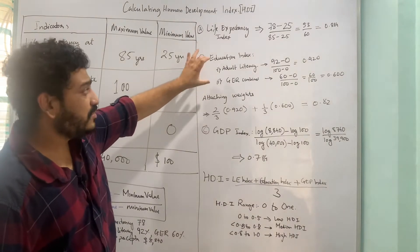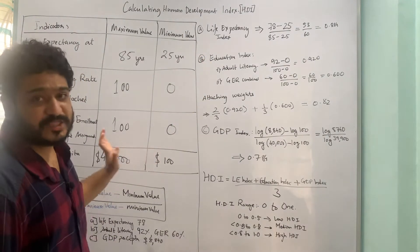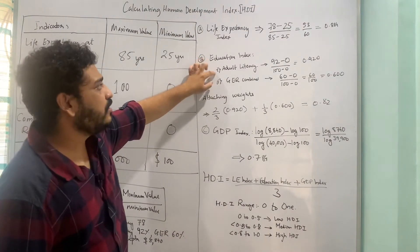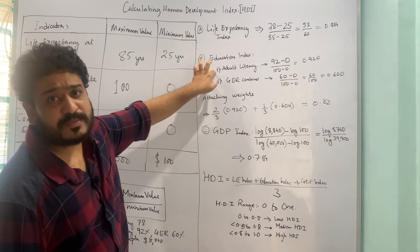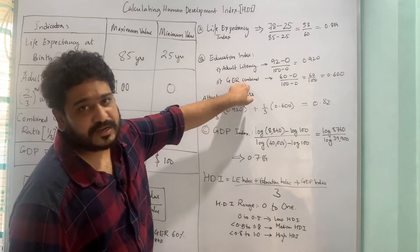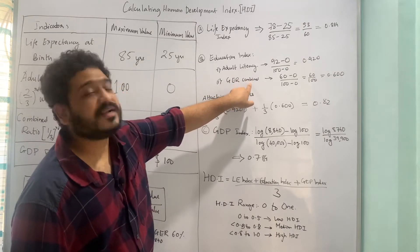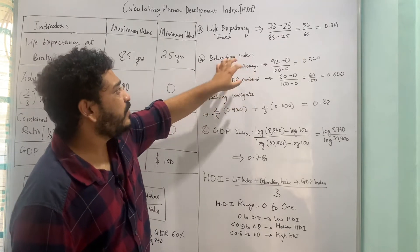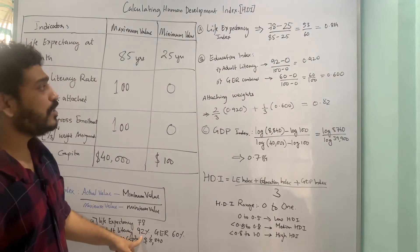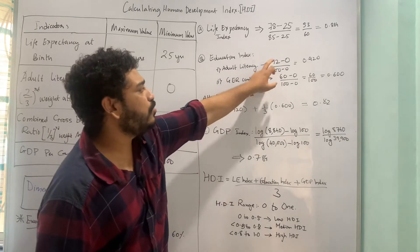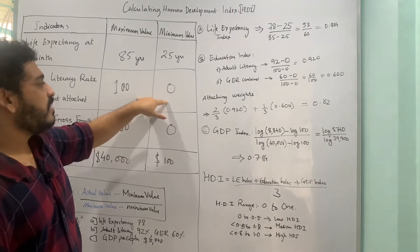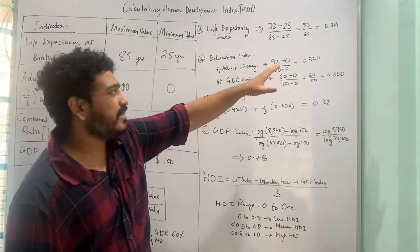Now for the education index, I look at two dimensions. First, adult literacy rate, to which I attach two-thirds of the weight. For Country A, the adult literacy rate is 92%, so the calculation is: 92 minus 0, divided by 100 minus 0, which gives 0.92.